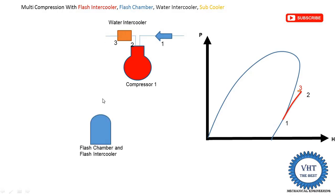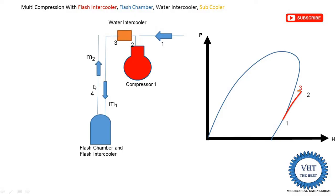Then refrigerant is supplied into the flash intercooler or flash chamber. Flash means it is a partially saturated vapor coming out from the expansion device. Intercooler means it reduces the temperature of refrigerant between the two compressors. With the help of this partially saturated vapor, we reduce the temperature of refrigerant coming out from the water intercooler, whose mass is M1. Point 3 is superheated, so it is converted into saturated vapor after cooling. The mass M2 is the mass of refrigerant coming out from the intercooler, supplied into the high pressure compressor at point number 4. Point 4 is on the saturation line at intermediate pressure.